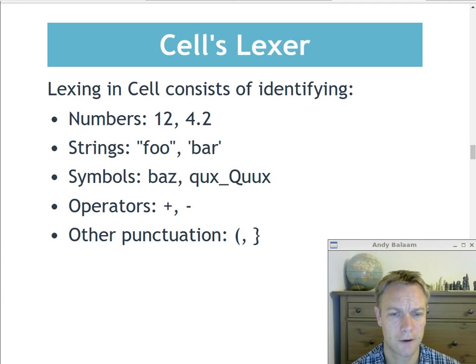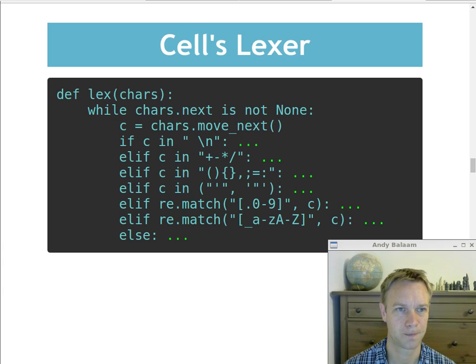So the Cell lexer only knows about these types of things. Numbers, which could be something like 12, or it could be something like 4.2. So decimals are included in that token type called number. They could be strings, which could be surrounded either by double quotes or by single quotes. They could be symbols, which are just words with no quotes around them. They could be operators like plus and minus. And they could be some special punctuation, like brackets, commas, curly brackets, curly braces. That's all we have to do in the lexer. All we have to do is we're given some characters coming out of a text file, and we have to break them up into tokens and say what type each token is.